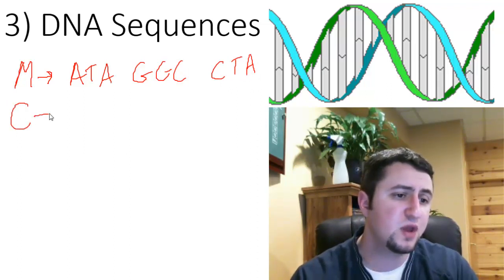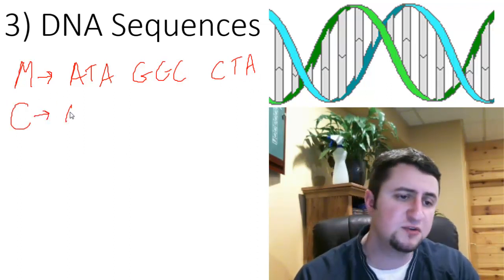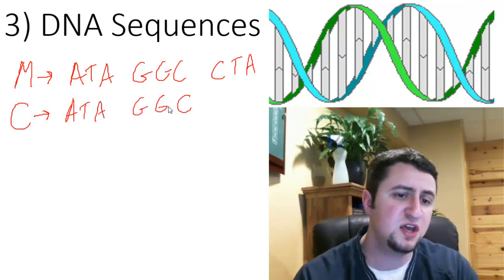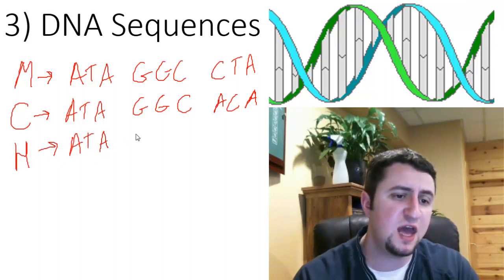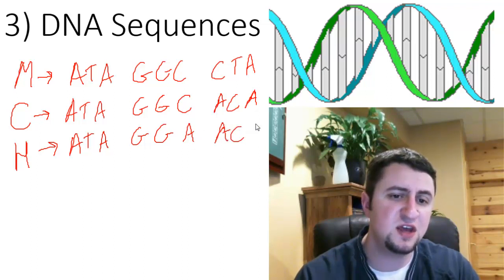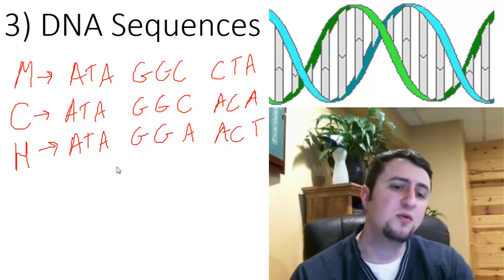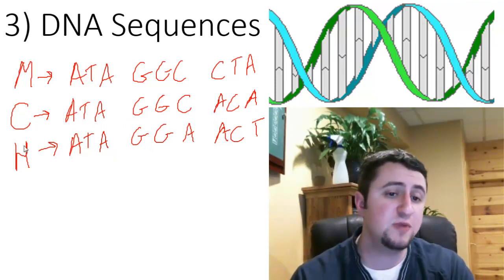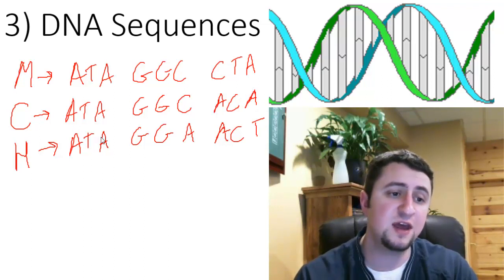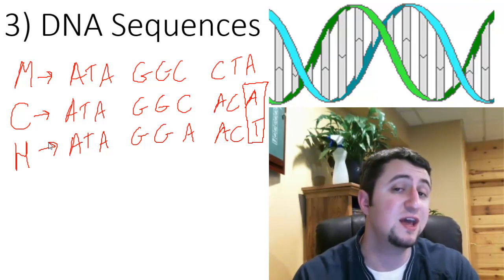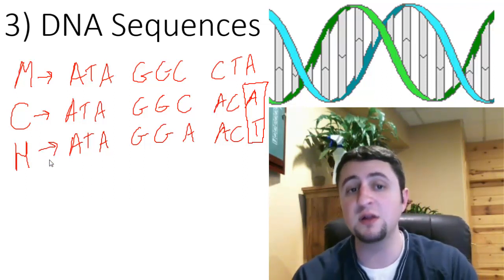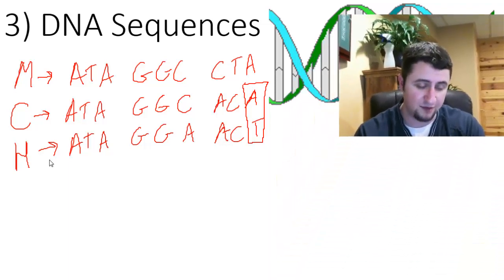If we compare that to a chimp — say, A, T, A, G, G, C, A, G, A, C, A — and then to a human — A, T, A, G, G, C, A, C, T — hopefully you can see that a chimp and a human have a closer DNA sequence than, say, a human and a monkey. Humans and monkeys are a lot more different. In fact, right here is the only difference between chimps and humans. So the DNA sequence being more closely related indicates that we are probably closer related on the family tree of life.